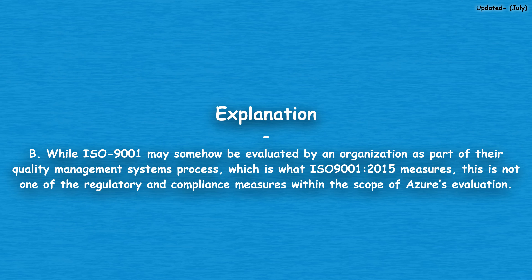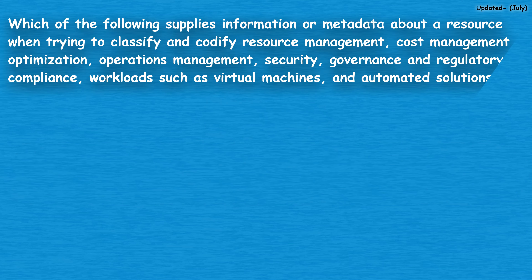While ISO 9001 may somehow be evaluated by an organization as part of their quality management systems process — which is what ISO 9001:2015 measures — this is not one of the regulatory and compliance measures within the scope of Azure's evaluation. The next question: which of the following supplies information or metadata about a resource when trying to classify and codify resource management, cost management, optimization, operations management, security, governance and regulatory compliance, workloads such as virtual machines, and automated solutions?